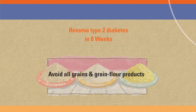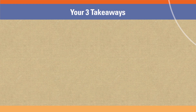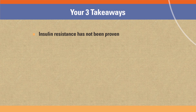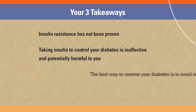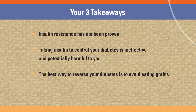So that is what I'm suggesting. I thank you all for coming and listening to my talk. I would like to summarize three points. First, insulin resistance — the concept has never been validated through logic, mechanism, or measurement. Second, taking insulin injections will control your blood sugar, but you can still have complications associated with type 2 diabetes and, more importantly, cancer. Third, if you are serious about controlling your blood sugar and reversing type 2 diabetes, I suggest you start by avoiding grain and all grain flour products from your diet. Thank you.